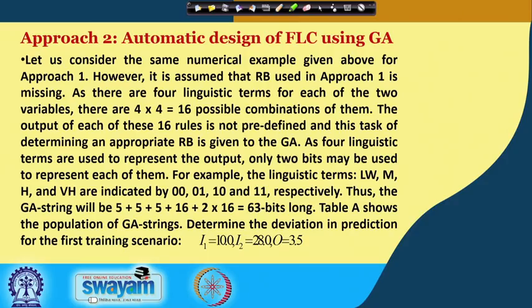Our aim is to design the optimal knowledge base of a fuzzy reasoning tool. In approach one, which I have already discussed, the designer based on his own experience of the problem to be modeled designs the knowledge base — that is the rule base and database — of the fuzzy reasoning tool. After that, we use one optimizer, say one nature-inspired optimization tool like genetic algorithm, to tune its database and rule base.